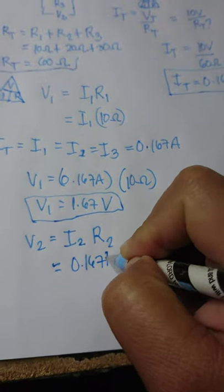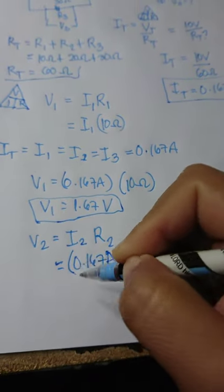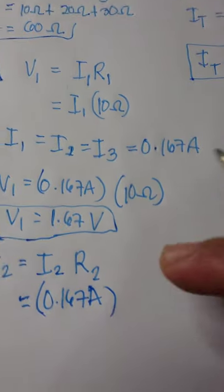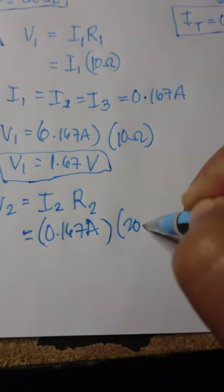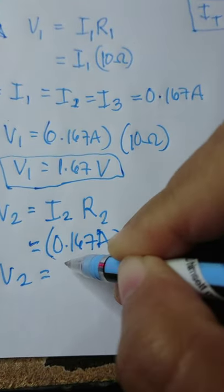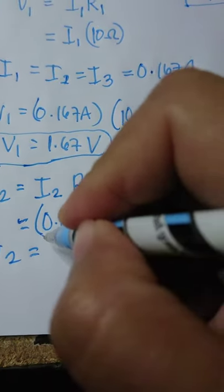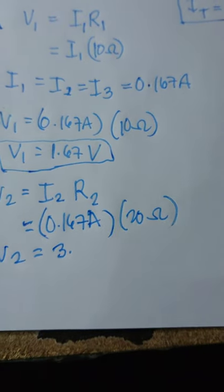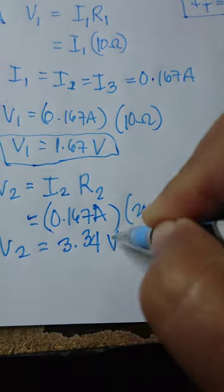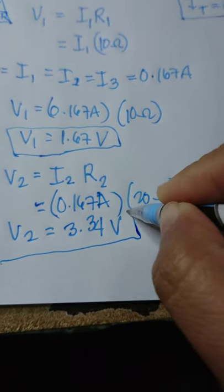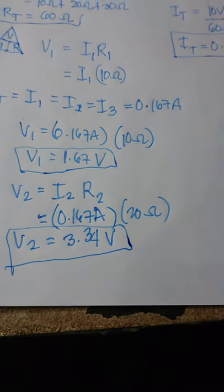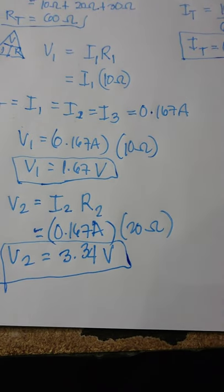which is 0.167 ampere times R2. What's the value of R2? It is 20 ohms. Then we get 3.34 volts. You can always round it up to nearest two decimal places.